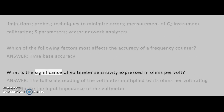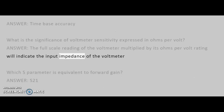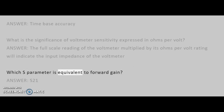What is the significance of voltmeter sensitivity expressed in ohms per volt? Answer: The full-scale reading of the voltmeter multiplied by its ohms-per-volt rating will indicate the input impedance of the voltmeter. Which S-parameter is equivalent to forward gain? Answer: S21.